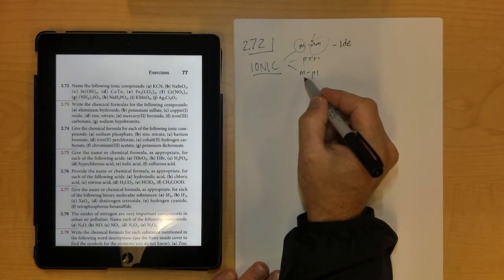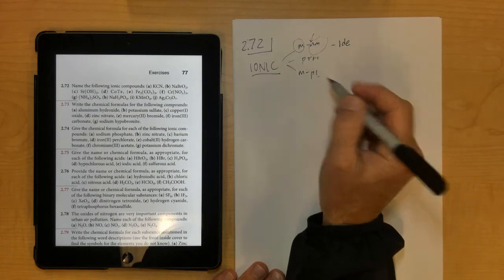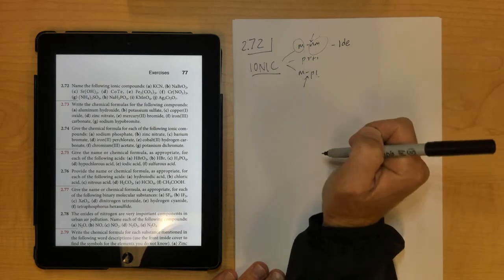For the metal and polyatomic ion, keep the names the same, but make sure that you have the Roman numeral in the middle.